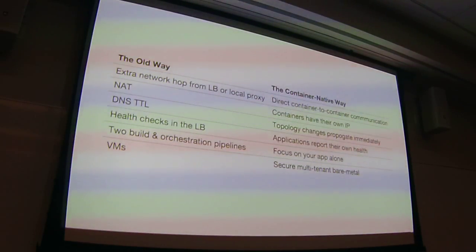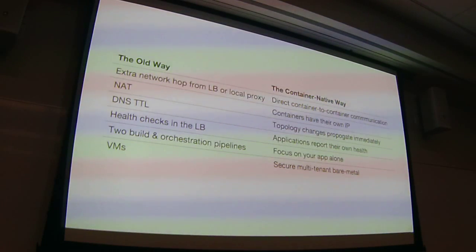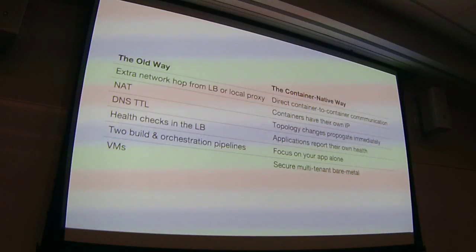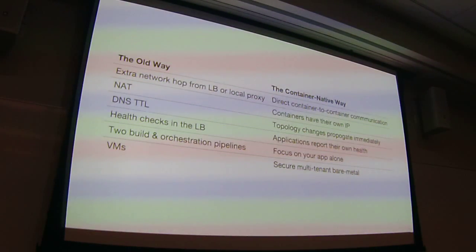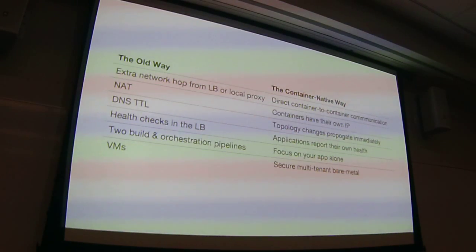This is the old-way model, and to call it 'old way' is a bit much since we're talking the last couple of years with containers. But I'm going to argue the right-hand column represents the container-native way. Container-native isn't about which scheduler you use, it isn't about the size of containers, it isn't about how many processes are in a container. It is about containers being first-class citizens, applications owning and responding to change, and focusing on building your app rather than on undifferentiated heavy lifting over your infrastructure. I'd argue that putting on secure multi-tenant bare-metal hardware is the best way to do that.